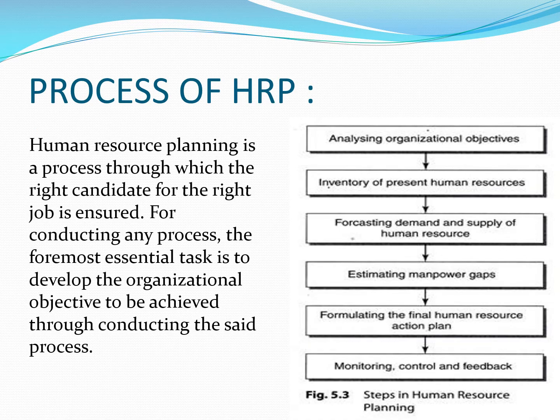Next topic is the process of human resource planning. Human resource planning is a process through which the right candidate for the right job is ensured — meaning the employee we have matches the job requirement. There are six steps of human resource planning. The first step is analyzing organizational objectives.